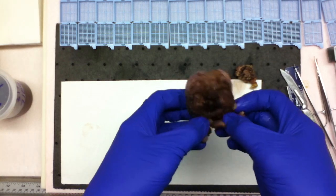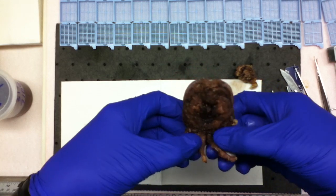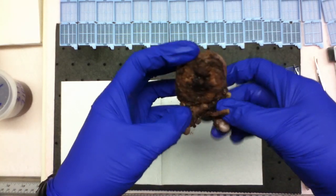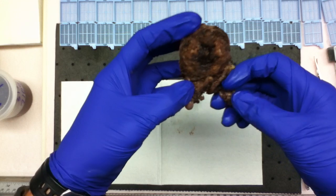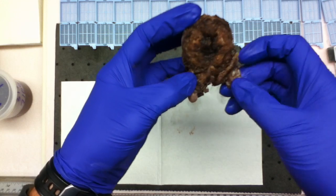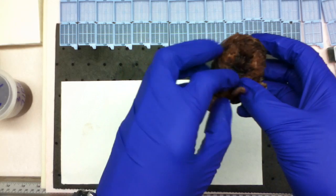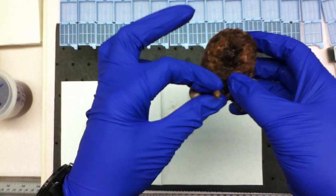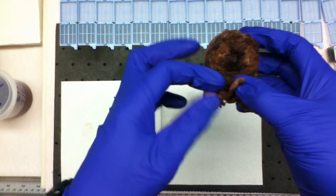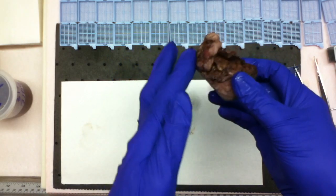You have the vas and seminal vesicles running along the posterior base of the prostate. You can see here on my right thumb I have the right seminal vesicle and the right vas deferens. And then here on my left is the left vas deferens and the left seminal vesicle. These kind of extend up the posterior base of the prostate.